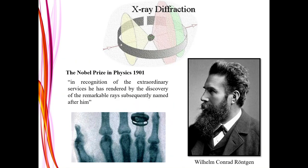Now let us talk about some history of how X-ray diffraction evolved. Everything started in 1895 when Roentgen discovered X-rays. The Nobel Prize in Physics in 1901 was given in recognition of the extraordinary services he rendered by the discovery of the remarkable rays subsequently named after him. You can see a photograph — it was the first X-ray ever taken, an X-ray of Roentgen's wife, and you can see her wedding ring on her finger.